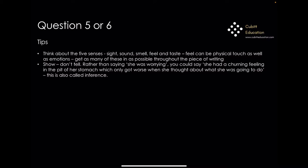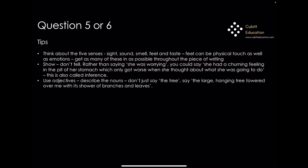Another tip is to show, don't tell. Rather than saying 'she was worrying,' you could say 'she had a churning feeling in the pit of her stomach which only got worse when she thought about what she was going to do.' You haven't actually said she's worrying in that sentence, but it's obvious that she is. This is also called inference. Also use adjectives to describe your nouns — don't just say 'the tree,' say 'the large, hanging tree towered over me with its shower of branches and leaves.'